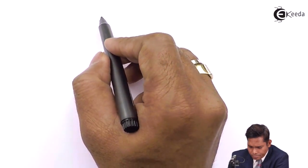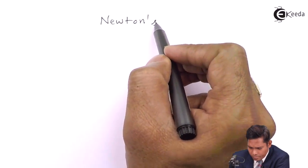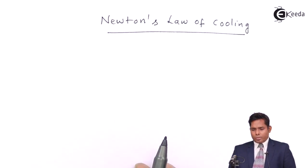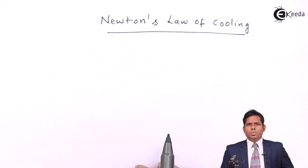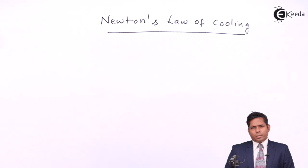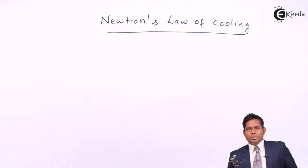Newton's law of cooling says that if we have one object having a certain temperature which is higher than the temperature of the surrounding in which it is kept, then gradually it will lose heat to the surrounding and cool down.